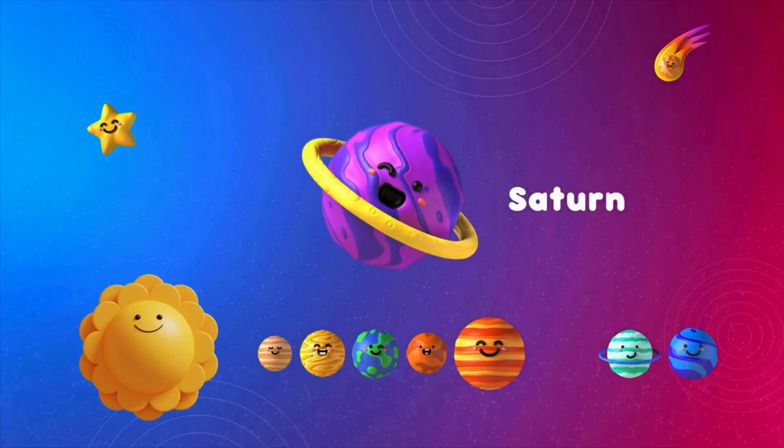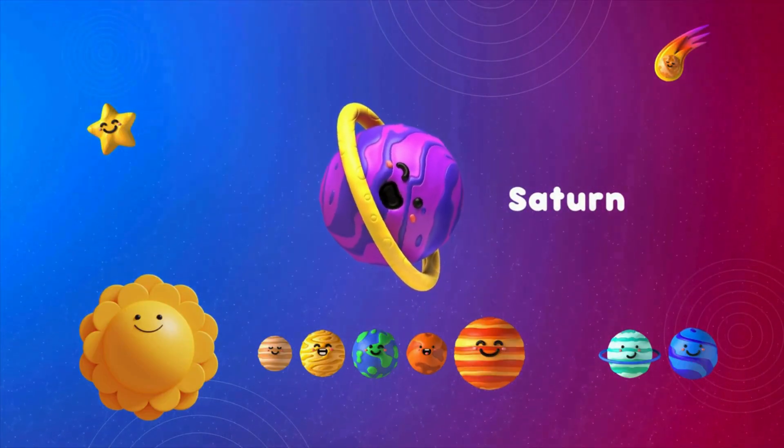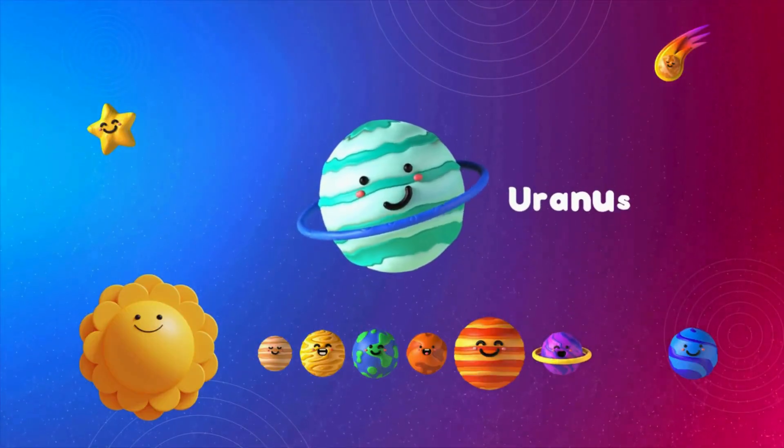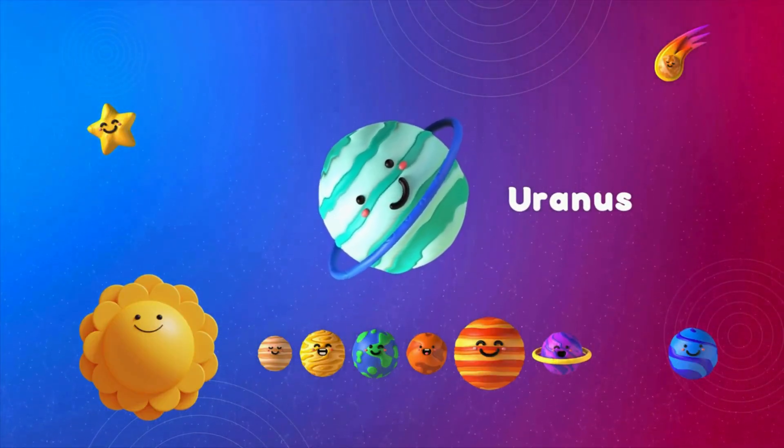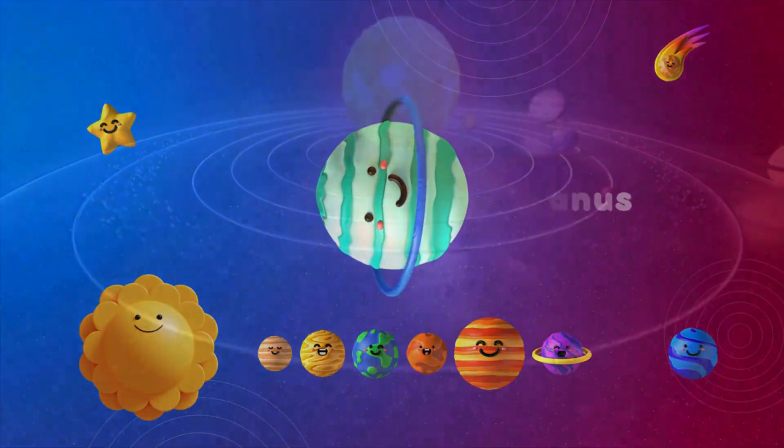Saturn's rings are beautiful and bright. The most beautiful planet. Uranus, the tilted planet. The seventh planet. Neptune, the farthest star.